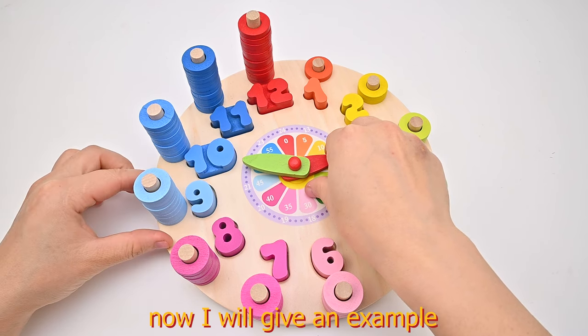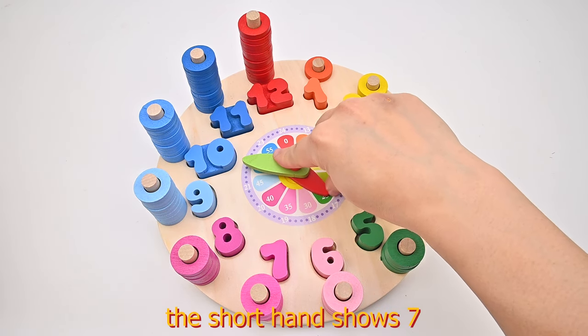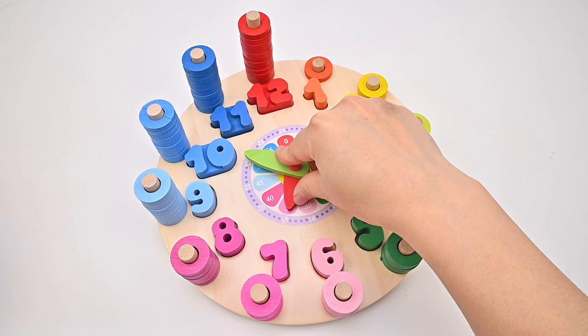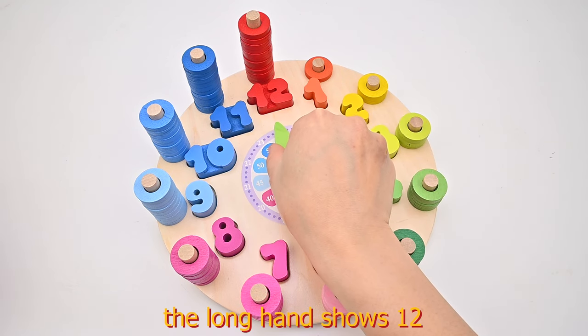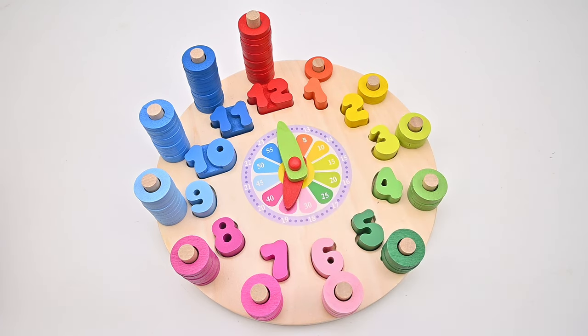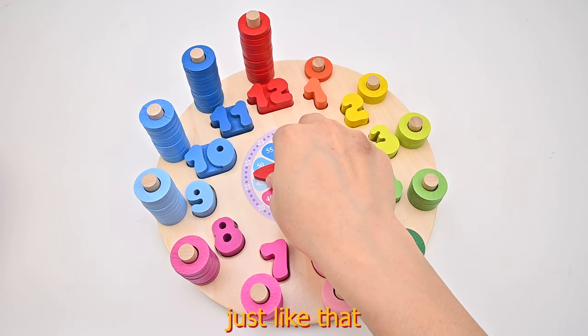Now I will give an example. The short hand shows 7. The long hand shows 12. 7 o'clock. Just like that.